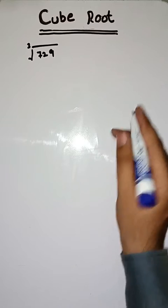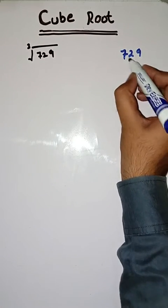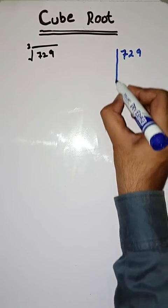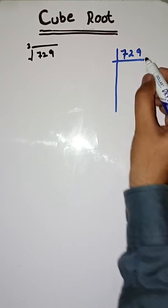First we have to find prime factors of 729. Let's start.